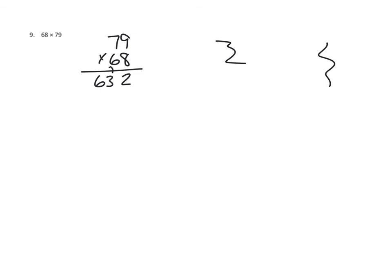Our next partial product is multiplying the 6 tens times 9. 6 tens times 9 ones is 54 tens, or 540, so we write 40 and carry the 5. Then we multiply 6 tens times 7 tens. That's 42 hundreds, plus 5 more is 47 hundreds. So we have 47 hundreds there.